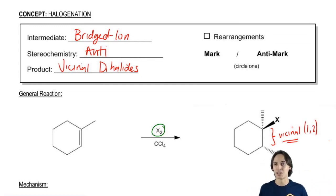So will there be rearrangements in this mechanism? No, there won't be because there's no carbocation. And then finally, since I'm adding two of the same thing, I'm not going to worry about Markovnikov because I'm adding two of the same thing, so it doesn't matter. So let's just scratch that out.